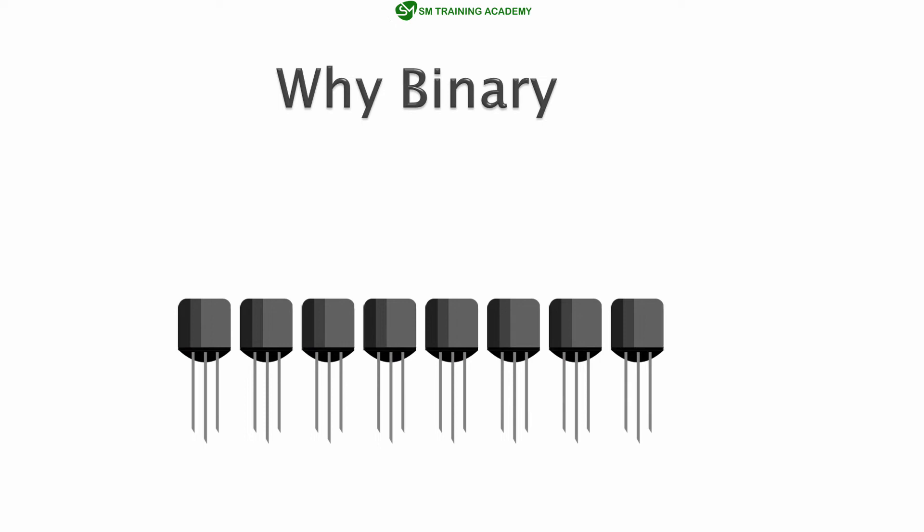Now let us understand why we use the binary numbering system over the decimal numbering system in computers. When we represent a number in binary format we need a certain number of bits clubbed together, because binary is nothing but 0s and 1s. When you want to represent 0 or 1 you can do that with just one single transistor. But for a value like 15, 16, or 20, we need a particular number of transistors clubbed together to represent that number. This clubbing of transistors defines the resolution of the computer.